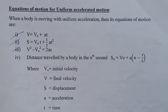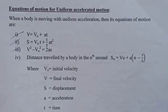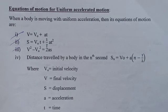So there are four equations of motion: V = V₀ + AT; S = V₀T + ½AT²; V² − V₀² = 2AS; and S_n = V₀ + A(n − ½). Here S is displacement, V₀ is initial velocity, V is final velocity, A is acceleration, and T is time. We will stop here and continue remaining mechanics concepts in the next class.